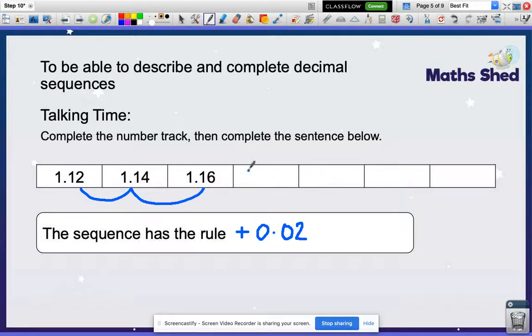So this one would be 1.18, 1.2, 1.22, and 1.24. I could put the 0 in here just to make it a bit more clearer. So the rule for that is you add 2 hundredths each time.